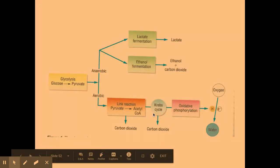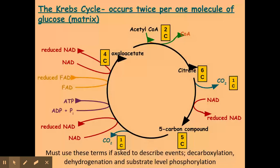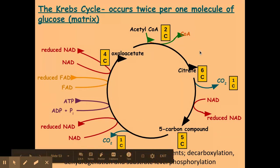So the Krebs cycle — we're up to this part now of respiration. We've looked at glycolysis, we've looked at the link reaction in aerobic respiration, and we're now on the Krebs cycle of aerobic respiration. The Krebs cycle again occurs within the matrix of the mitochondria, and it occurs twice per one molecule of glucose, because we produce two acetyl coenzyme A from the link reaction per one molecule of glucose.